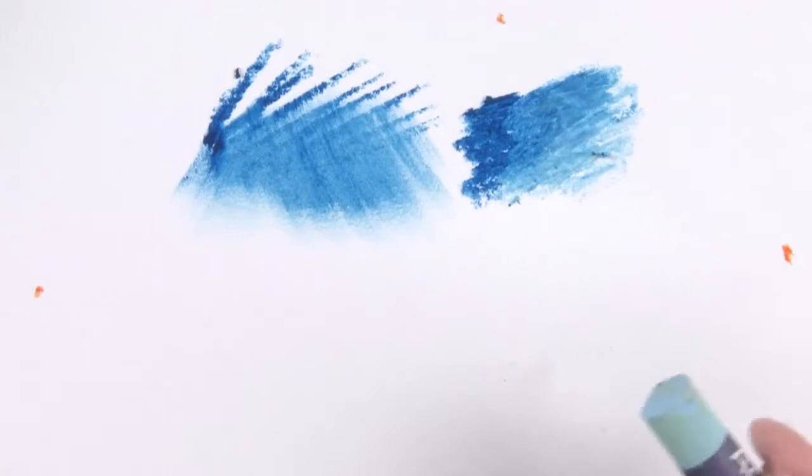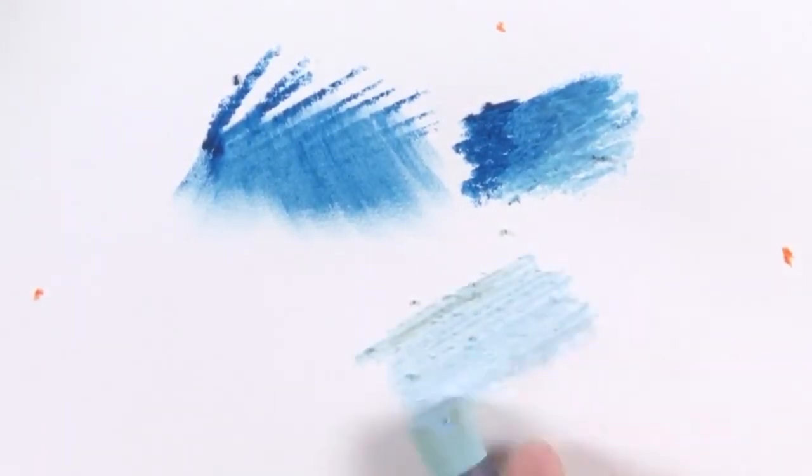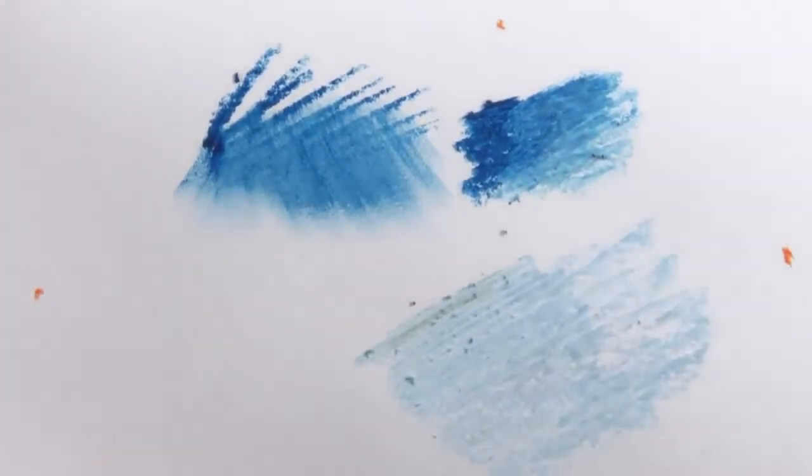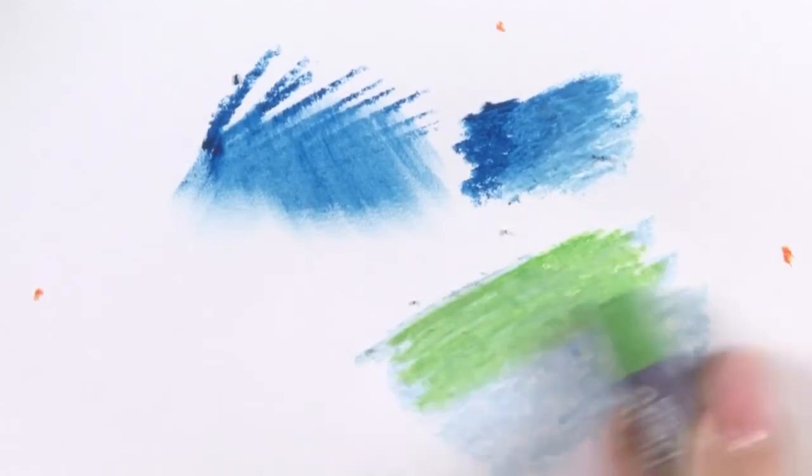What is quite nice to do is something called Sgraffito, and what that is all about is putting layers of light color down, one on top of each other, layering it like this.